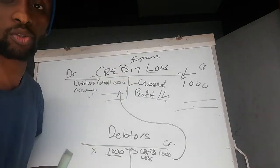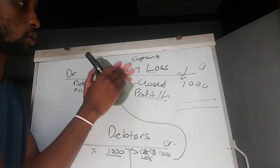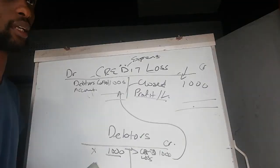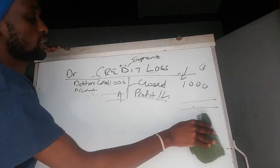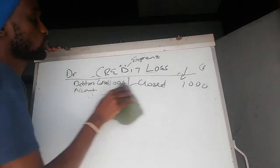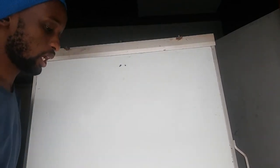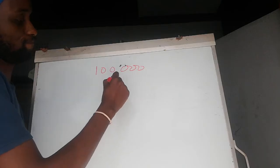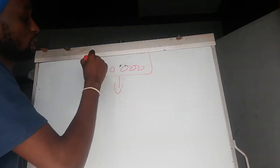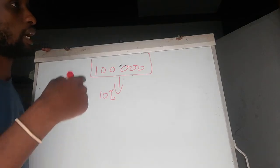Credit loss is an expense to the business — it increases on the debit side and is closed off on the credit side. Incomes and expenses are not carried over to the next year. Now, because our business offers credit, in accounting we have to be prudent. Prudence tells us that if we offer credit of, say, 100,000, we have to make provision that probably ten percent might not pay.